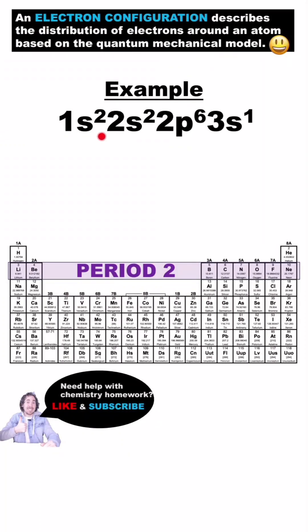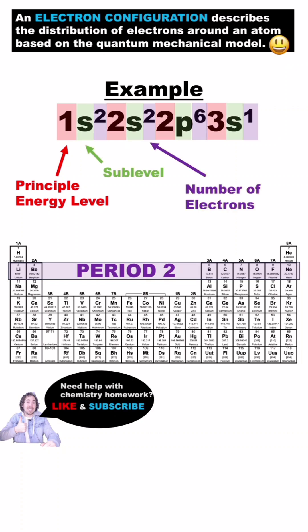The electron configuration for an element shows how electrons are distributed in the atomic orbitals. The large numbers indicate the principal energy level, the letter is the sublevel, and the superscript number is how many electrons occupy that sublevel.